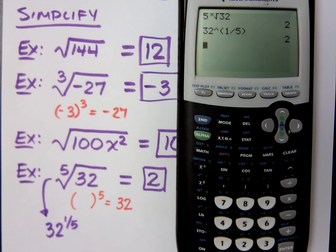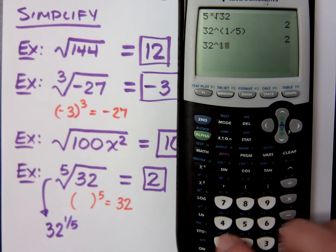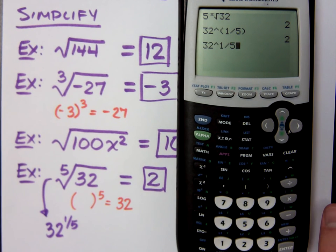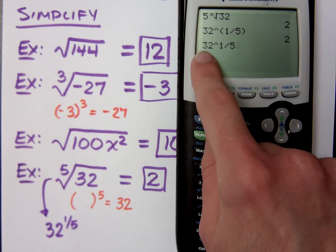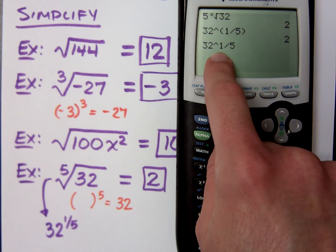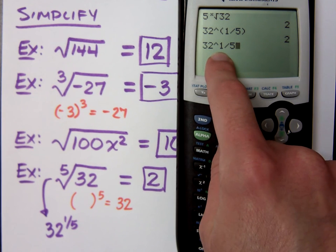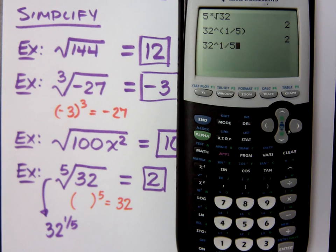Now, be careful with this, though. If you are not careful and you just do 32 raised to the one-fifth like that, the calculator is going to do exactly what you tell it to do. And in this case, it's going to do 32 raised to the first power, which is 32, and then divide that by five. So we end up with 6.4. And that's not what you want.